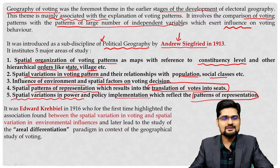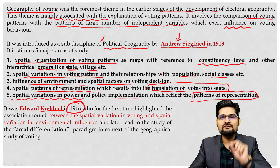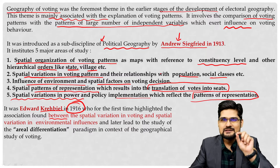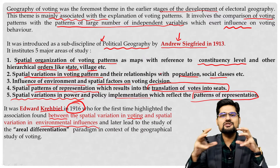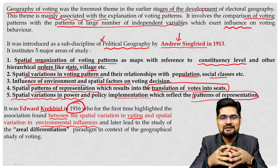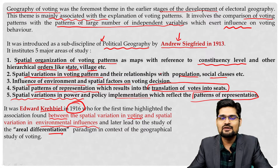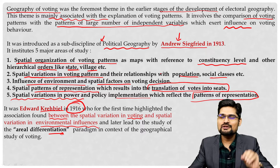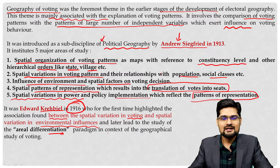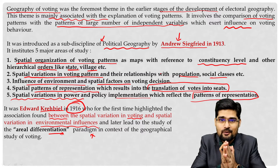Another scholar, Edward Crabbe in 1916, for the first time highlighted the association between spatial variation in voting and spatial variation in environmental influences — meaning there is a relationship between environmental influences and voting pattern. We also understand this through areal differentiation phenomena learned during the 1930s through the works of Richard Hartshorne, who was also a political geographer. This paradigm in the context of the geographical study of voting is very important to understand.